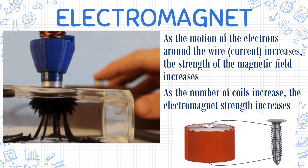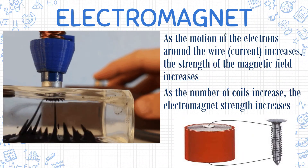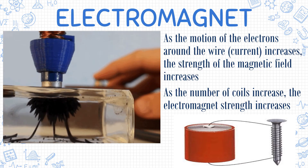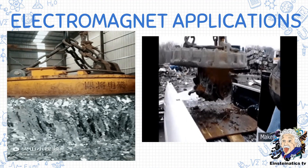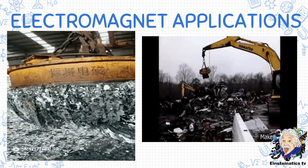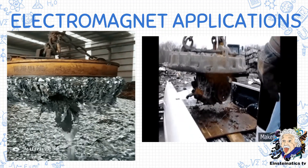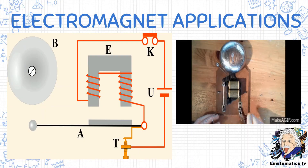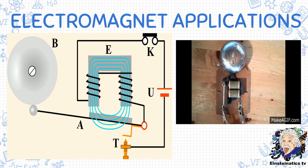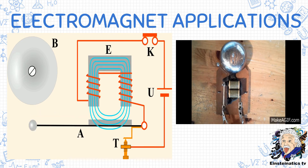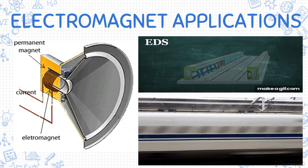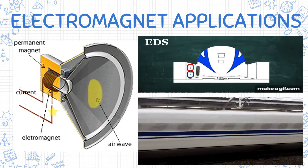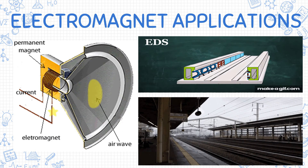Here are some applications for electromagnets. They are commonly used in junkyards to pick up large scrap metals. Electromagnets are also utilized in the technology behind electric bells or buzzers, as well as speakers, and of course the fastest train in the world — the maglev train, or magnetic levitation train.